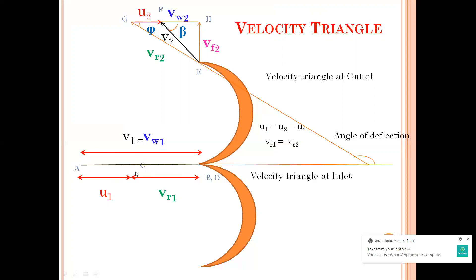Now the water is striking here and coming to the outlet. Here again it is smooth — there is no shock — so vr1 is equal to vr2. Your vr2 makes an angle of phi as seen earlier, and your v2 makes an angle of beta. In Pelton wheel design your beta is always less than 90 degrees.